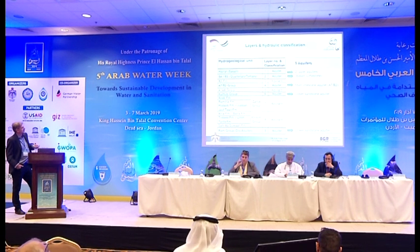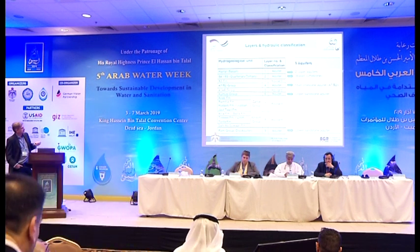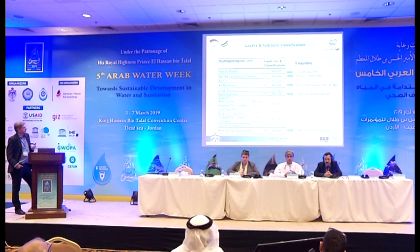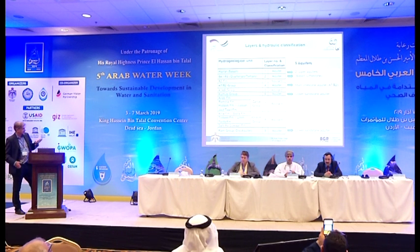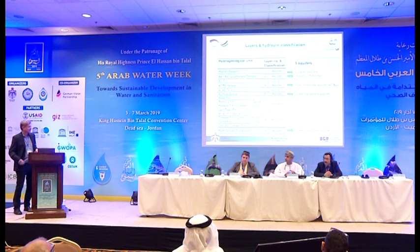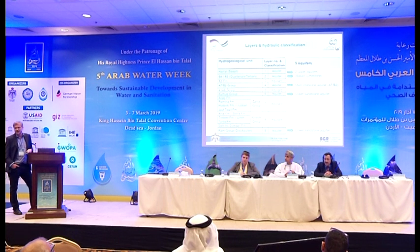We ended up with five aquifers: the upper limestone aquifer or basalt aquifer. Then the main target aquifer is the so-called A7B2. This is the most prominent aquifer here in Jordan, and had to have been exploited, as have the other two above. Below sits a very thick aquitard which is the A1-6 group. Below that are the sandstone aquifers, which are now successively being exploited more and more, but they are at higher depth, so it's more difficult to exploit them.